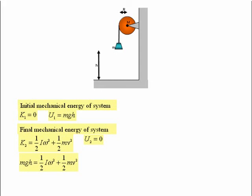Now, for a solid cylinder, the moment of inertia is given by a half MR squared. Substituting that into the previous equation just gives us mgh equal to a half times a half MR squared omega squared plus a half mv squared.